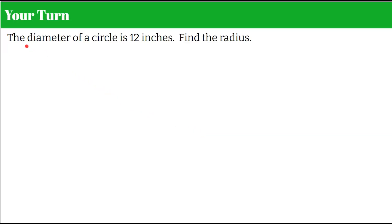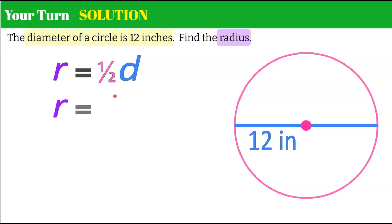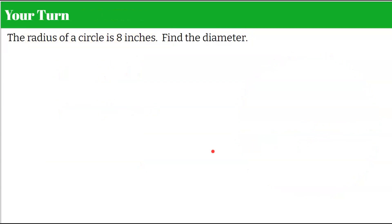Now it's your turn. The diameter of our circle is 12 inches — find the radius. The radius is equivalent to half of the diameter. So the radius equals half of 12, which is 6 inches. If our diameter is 12, our radius is 6. Think about that: 6 plus 6 is 12.